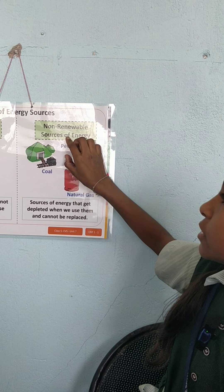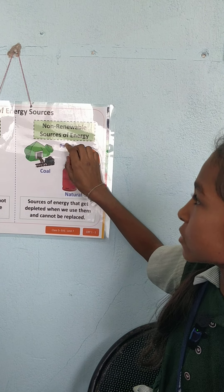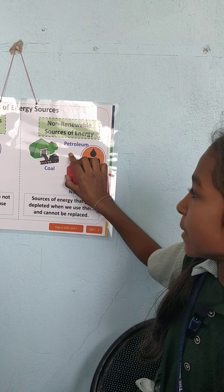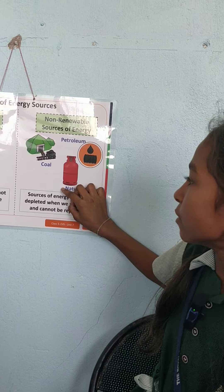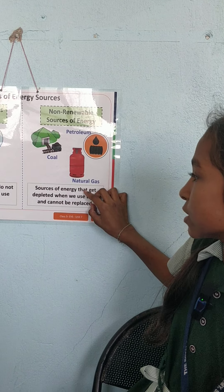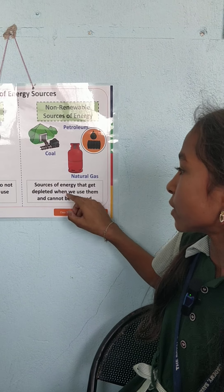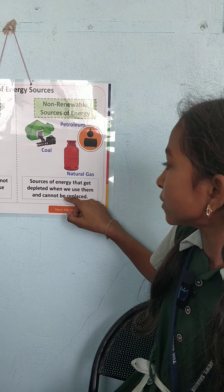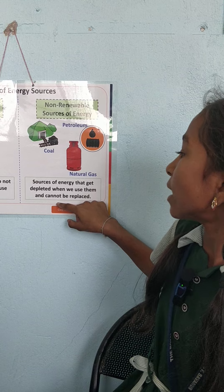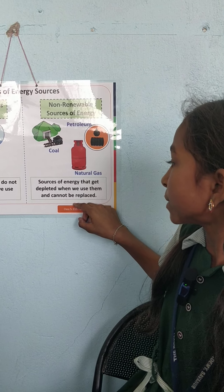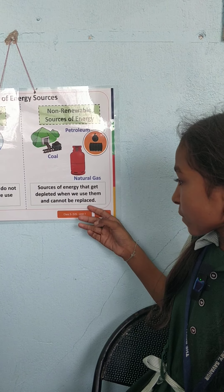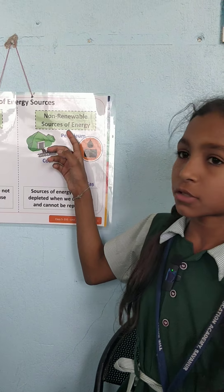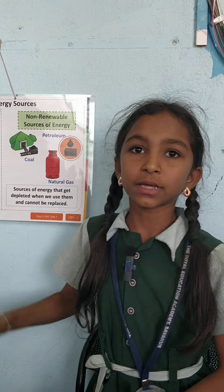The second type is non-renewable sources of energy. Examples include petroleum, coal, and natural oil. Sources of energy that get depleted when we use them and cannot be replaced are called non-renewable sources of energy.